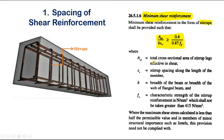Here ASV is the total cross-sectional area of stirrup legs, SV is the spacing of stirrups along the length of the member, and b is the width of the beam. fy is the characteristic strength of the stirrups. Where the maximum shear stress calculated is less than half the permissible value, and in members of minor structural importance such as lintels, this provision need not be complied with.